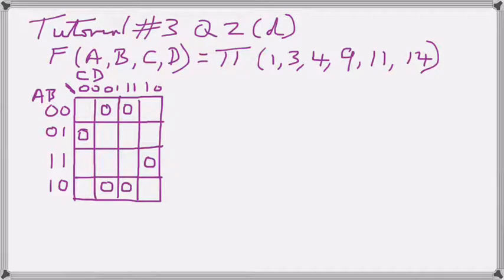First, we fill in all the ones. If it isn't a zero, it has to be a one. As we look at it, we see that we have two large groups of four ones there staring us in the face. We are going to circle those first.